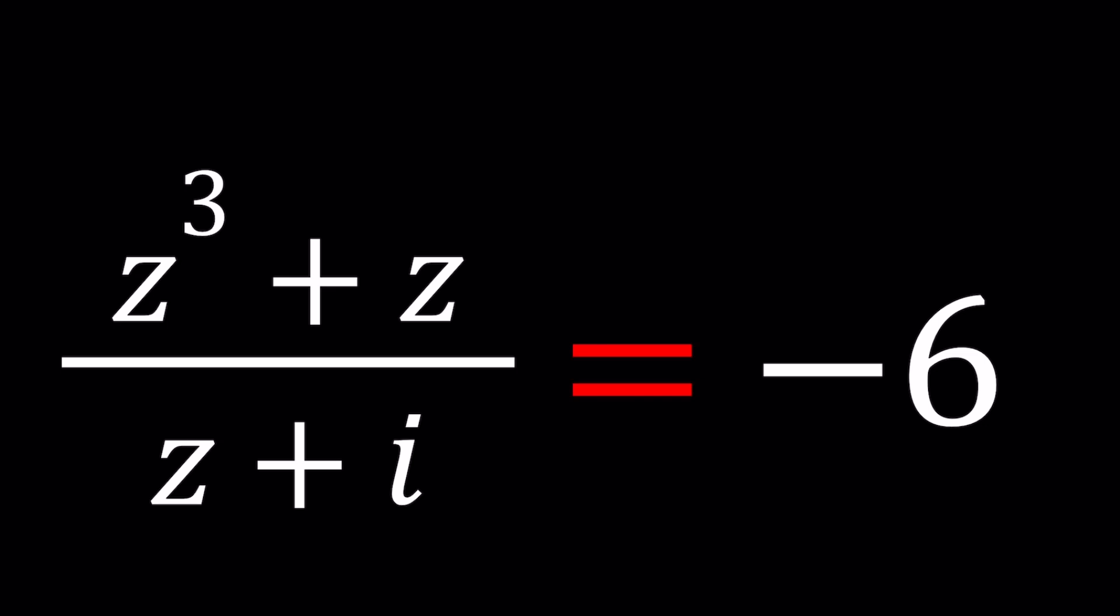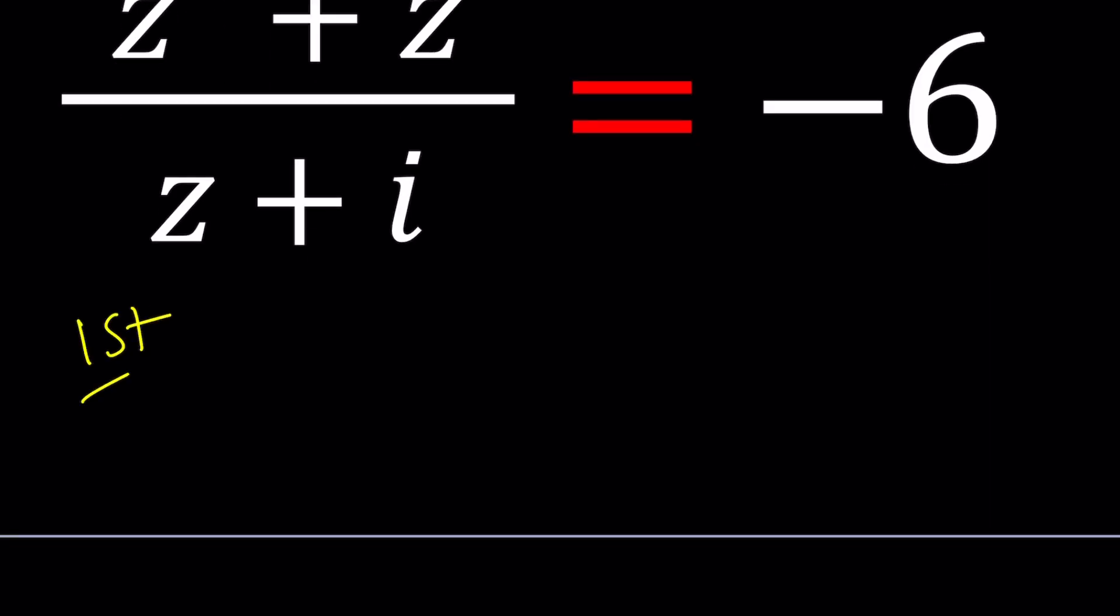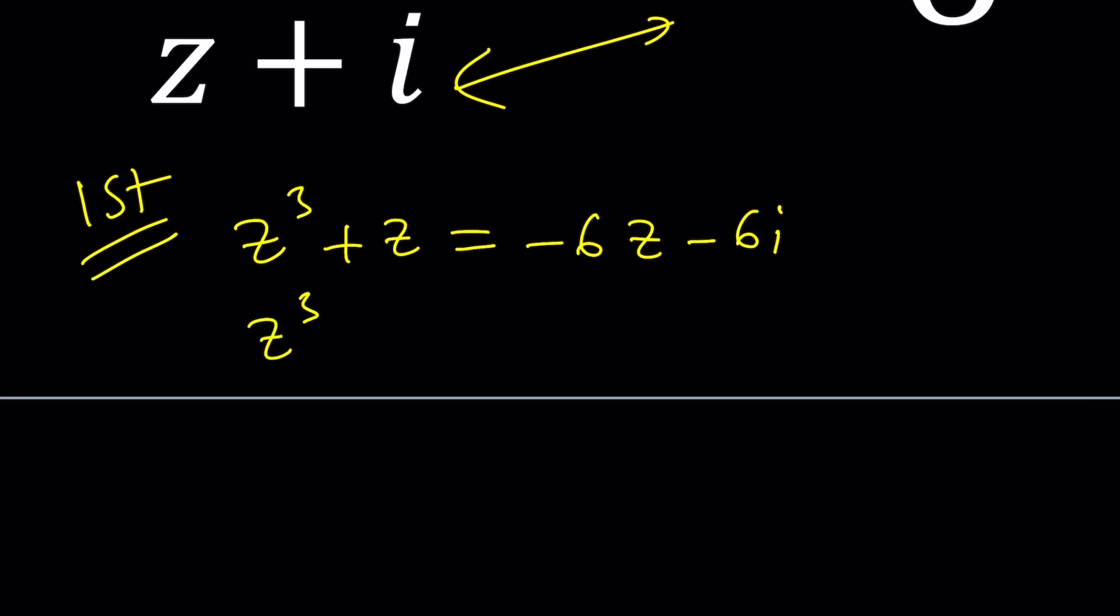I'll be presenting two methods and let's start with the first one. For my first method, I want to use cross multiplication. We get Z cubed plus Z equals negative 6Z minus 6I. Let's put everything on the left hand side. Z cubed plus 7Z plus 6I is equal to 0.